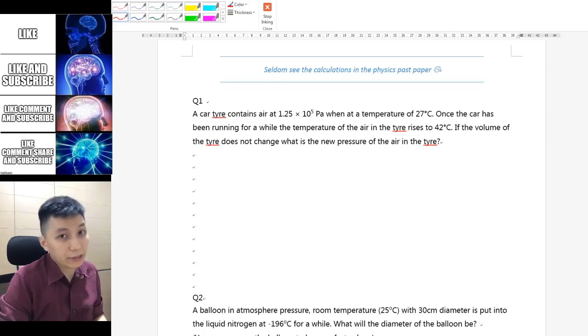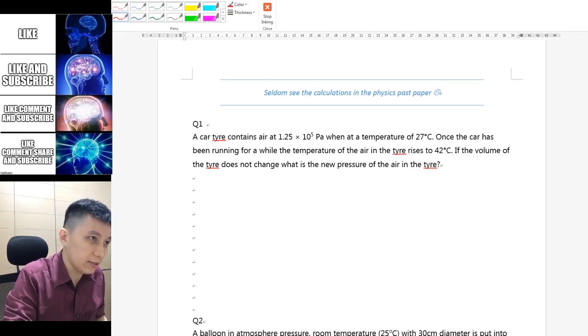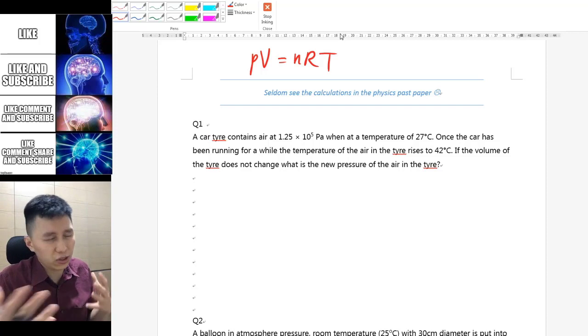Previously you have learned about the equation for ideal gas law, so let me just quote it again: PV equal to nRT. Using this can help you to deduce all three gas law equations.